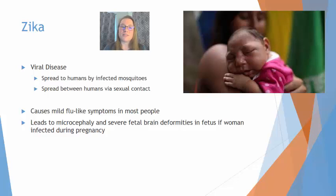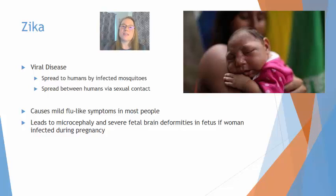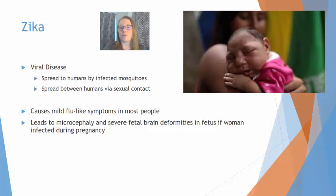Zika virus is a viral disease spread to humans through infected mosquitoes and also from human to human through sexual contact. Zika causes mild flu-like symptoms in most people. However, scientists discovered that women infected with Zika while pregnant tended to have babies born with microcephaly — small heads — and severe fetal brain deformities, which quickly elevated the urgency of controlling this viral outbreak.